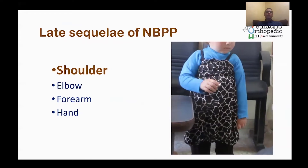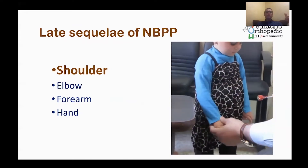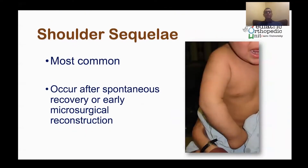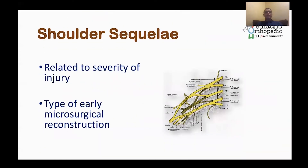Late sequelae affect the shoulder, the elbow, the forearm, and the hand. The shoulder is the most common to have late sequelae of brachial plexus palsy, and shoulder sequelae are related to the severity of the injury and the type of microsurgical reconstruction. Sometimes nerve supply is redirected entirely to the hand, leaving the shoulder paralytic, which may cause late sequelae.